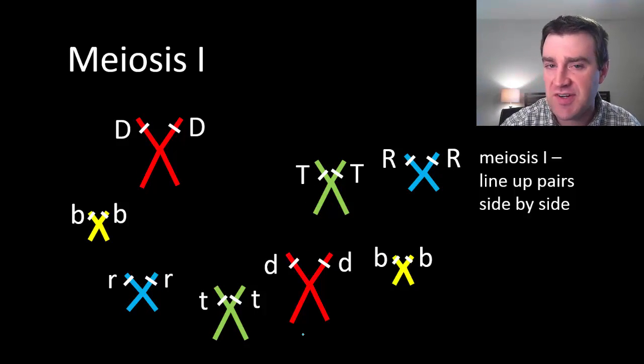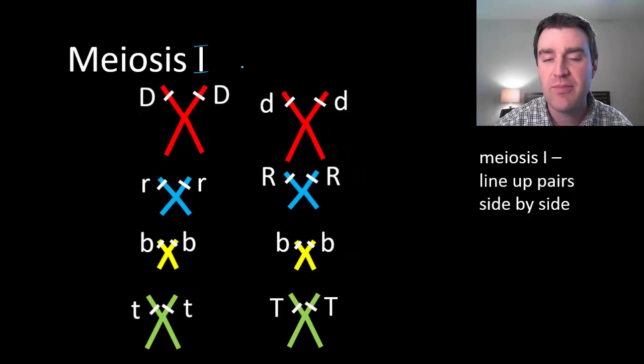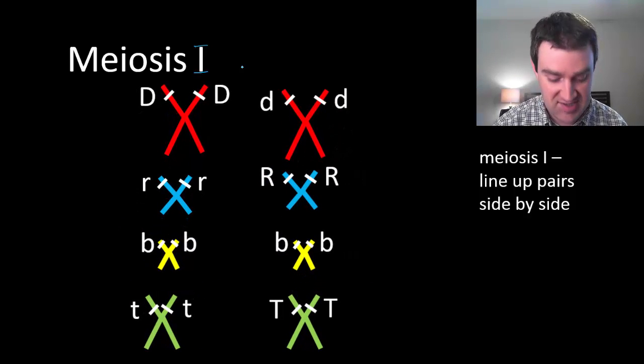This is where meiosis starts to become very different from mitosis. First of all, we use Roman numerals. This is supposed to be like a Roman numeral one up here. So in the first meiotic division, we're going to line up and split up the DNA, but we line up the DNA very differently from mitosis. We're actually going to bring the homologous pairs side by side like this.